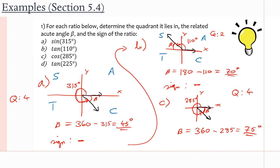Now we have to find out the sign of the ratio — the sign of cosine of 285 degrees. Again, we use our CAST rule. Writing the letters makes it easy to see that we are in the fourth quadrant, where only cosine is positive, and we are working with cosine of 285 degrees. So the sign of our ratio is going to be positive.